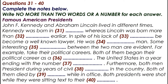John F. Kennedy and Abraham Lincoln lived in different times and had very different family and educational backgrounds. Kennedy lived in the 20th century, while Lincoln lived in the 19th century. Kennedy was born in 1917, whereas Lincoln was born more than 100 years earlier, in 1809. Kennedy came from a rich family, but Lincoln's family was not wealthy. Because Kennedy came from a wealthy family, he was able to attend expensive private schools and graduated from Harvard University. Lincoln, on the other hand, had only one year of formal schooling. In spite of this, he became a well-known lawyer — a self-educated man.